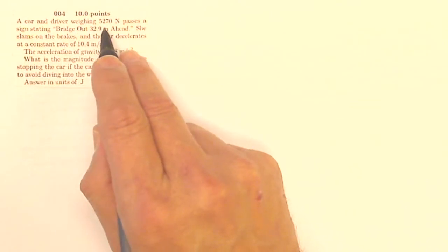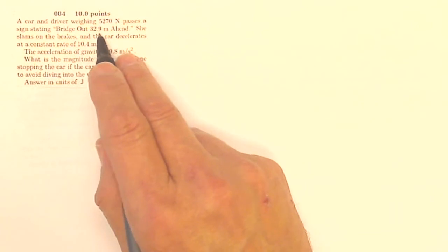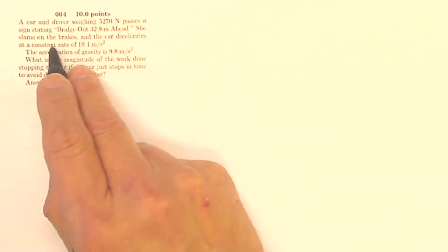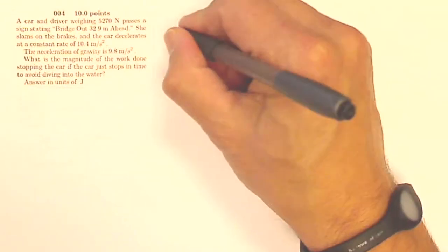A car and driver weighing 5270 newtons passes a sign stating bridge out 32.9 meters ahead. She slams on the brakes and the car decelerates at a constant rate of 10.4 meters per second squared.